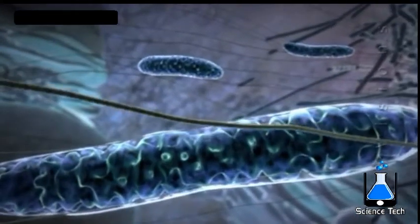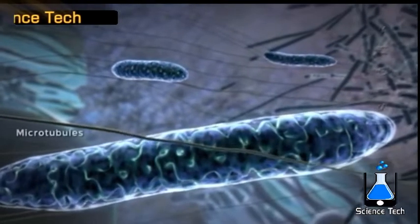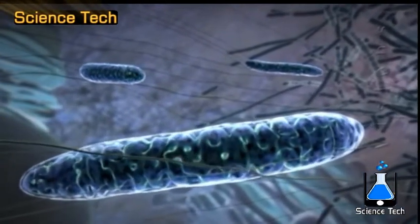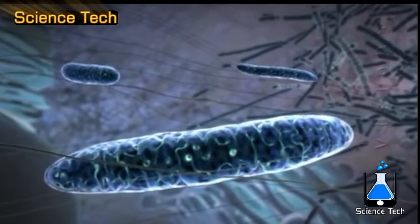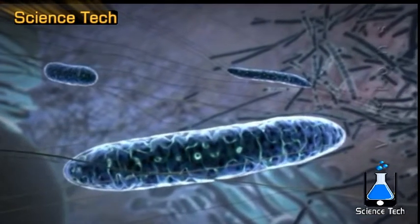Mitochondria move alongside a skeletal structure such as microtubules and can undergo dynamic changes in shape, including both fusion with other mitochondria and division.